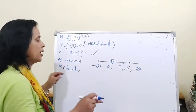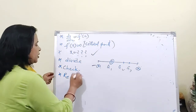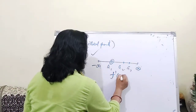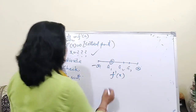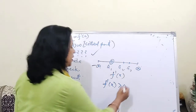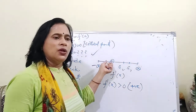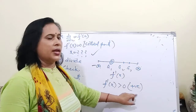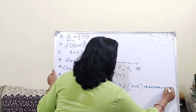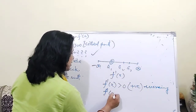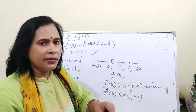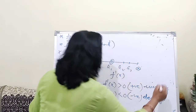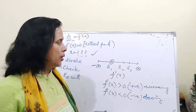After dividing, the next step is to check f'(x) in each interval. If f'(x) > 0, meaning it gives a positive answer, then the function is increasing. If f'(x) < 0, meaning the value comes out negative when you substitute values from that interval, then the function is decreasing.